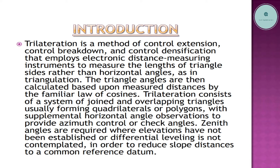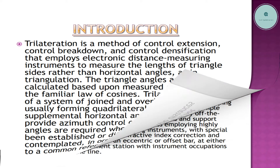Trilateration consists of a system of joint and overlapping triangles, usually forming quadrilaterals or polygons, with supplemental horizontal angle observations to provide azimuth control or check angles. Zenith angles are required where elevations have not been established or differential leveling is not contemplated, in order to reduce slope distances to a common reference datum.